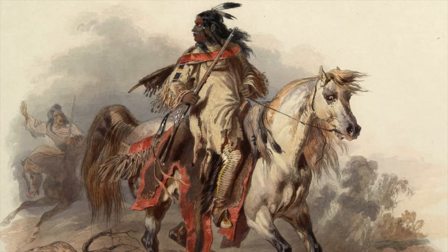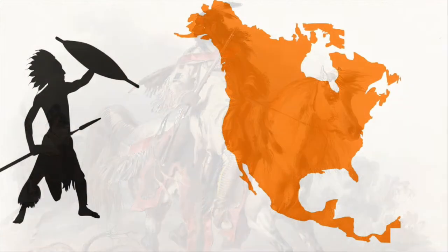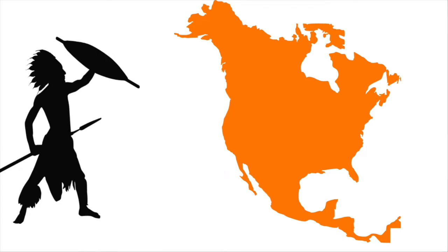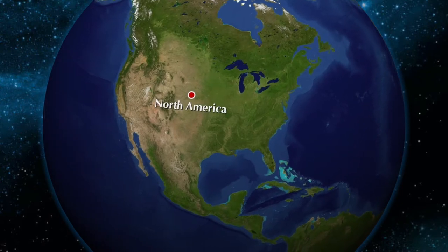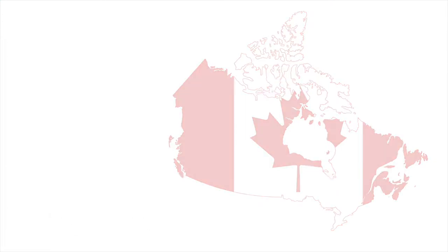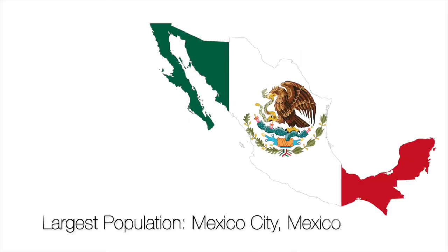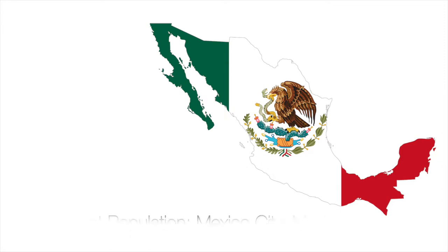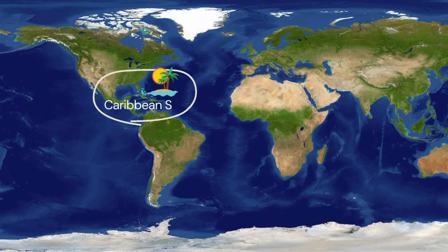But centuries later, some of the American tribes are still found in different parts of North America, and two of the largest tribes are the Navajo and Cherokee tribes. Nowadays, North America is composed of 23 countries. The largest country is Canada, the richest one is the United States, and Mexico City in Mexico is the most populated one. The enormous island of Greenland and the small islands in the Caribbean Sea are also part of this continent.